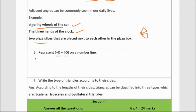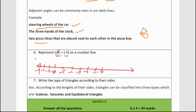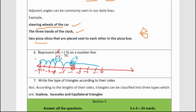Question 6: Represent minus 4 plus minus 5 on a number line. Minus 4 lies on the left side of 0. Starting at minus 4, we move 5 more steps to the left since minus 5 is a negative number. So minus 4 plus minus 5 equals minus 9.